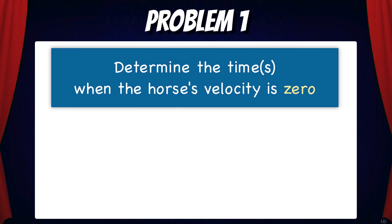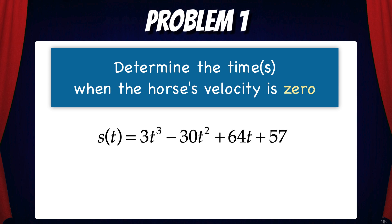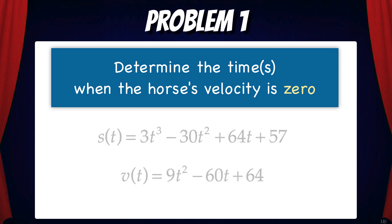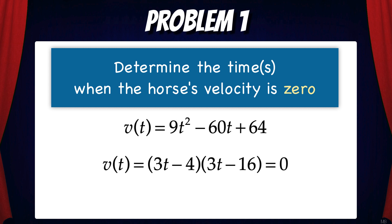Problem 1: Determine the times when the horse's velocity is 0. In order to find these times we need the velocity function, so let's take the derivative of the position function. When we do this we get v equals 9t squared minus 60t plus 64. We can factor this to (3t minus 4)(3t minus 16) and set that equal to 0. Solving, we get t equals 4/3 and t equals 16/3. Those are the times when the horse's velocity is 0.